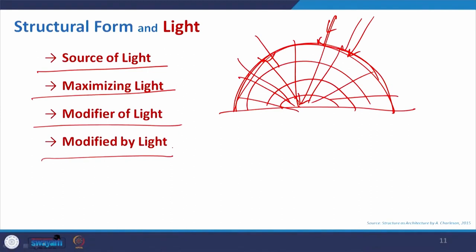The last but not the least is the modified by light category. Sometimes the structure's form, texture, and position — the visual appearance — will be modified by the light. With the direction of light and the amount and intensity of light, the structure can be seen as a component that gets modified by light. Now we will focus on each category and try to understand it with some examples.